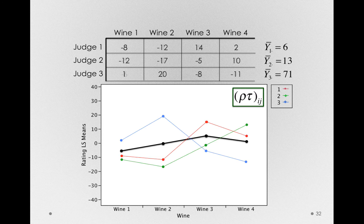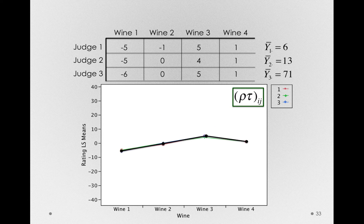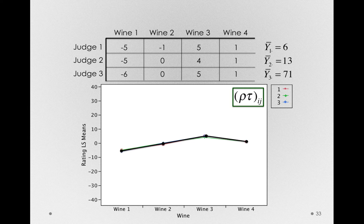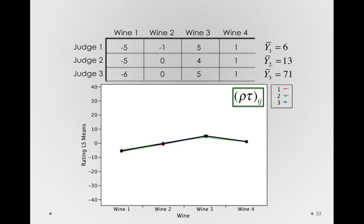But notice, in the data that I showed you, where all the judges made very similar ratings of the wines once we subtracted off their overall average, this would give us an indication that we have a stable effect.